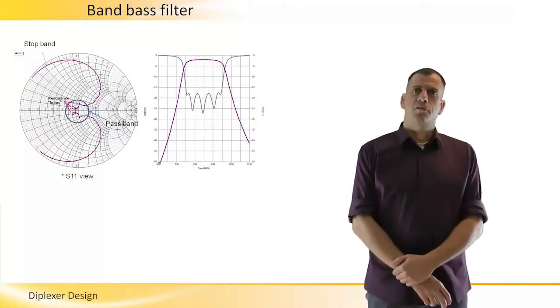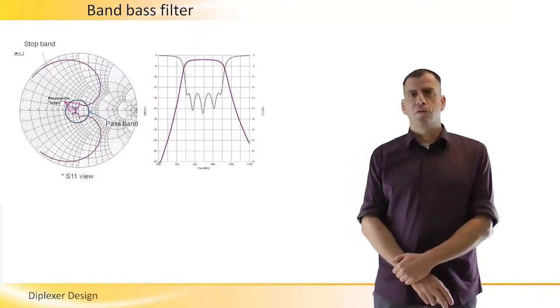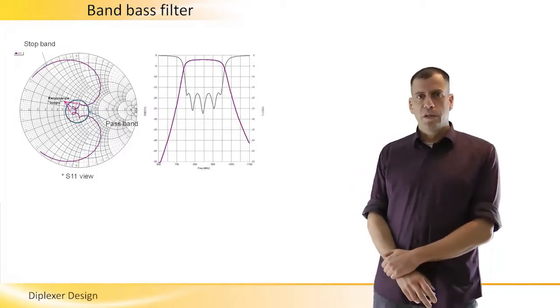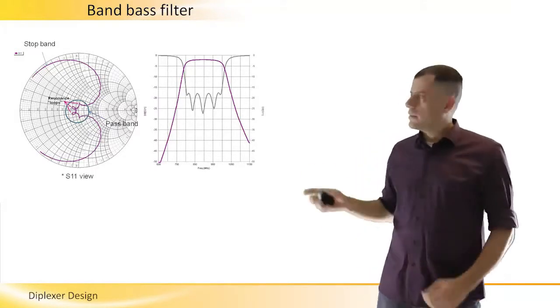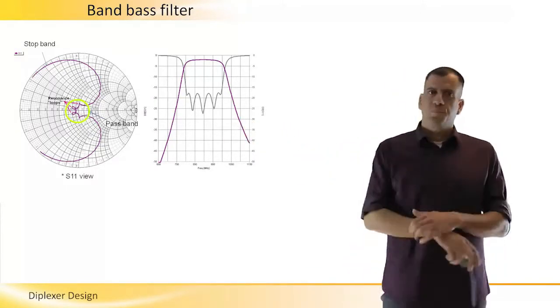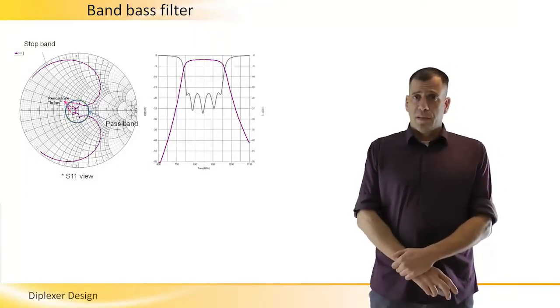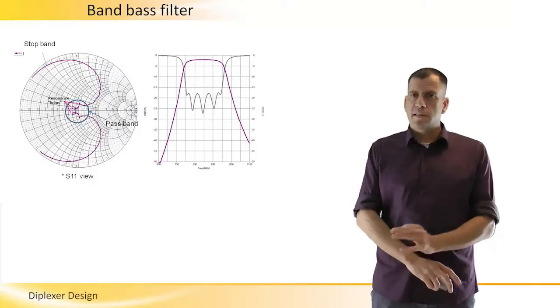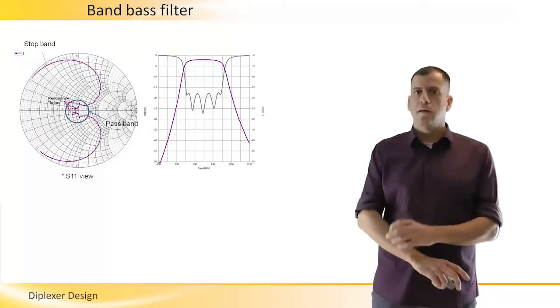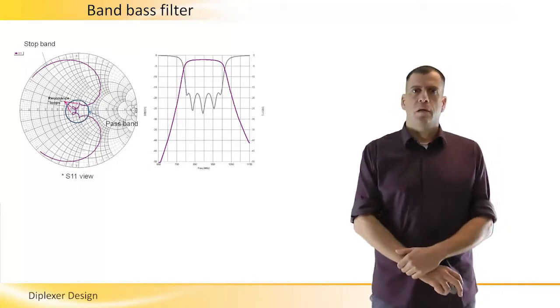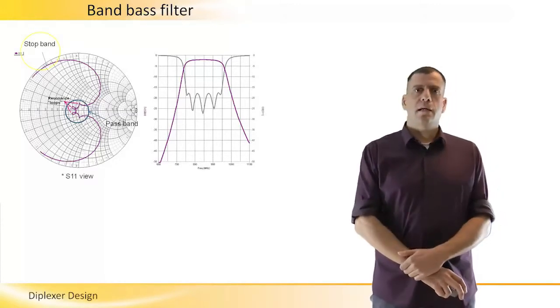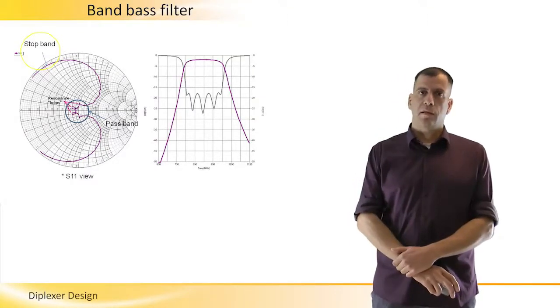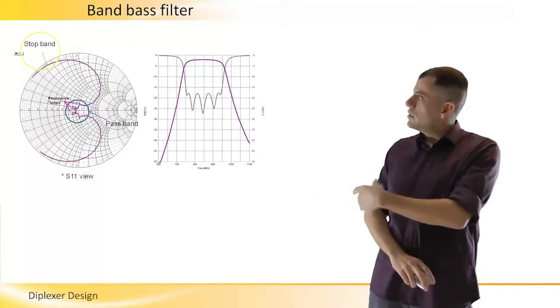The last issue we have to cover before we start is the reflection coefficient view of a passband filter on a Smith chart. The poles that we see in the 2D graph are the loops right here in the center of the Smith chart. The passband return loss can be calculated from the radius of the smallest center circle that rubs inside all those loops. At the stop band, we will see how the reflection coefficient approaches the value of 1, which is near the circumference of the Smith chart.